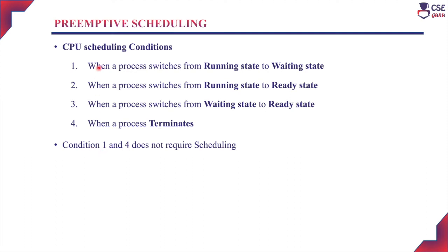Conditions 1 and 4 are not actually scheduling in the strict sense — they represent a new process being assigned to the CPU. When a process switches from running to waiting, a new process is assigned to the CPU. Similarly, when a process terminates, a new process is assigned. So conditions 1 and 4 are simply new job assignments to the CPU for execution.